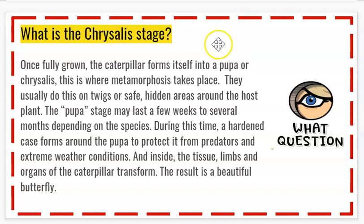What is the chrysalis stage? Once fully grown, the caterpillar forms itself into a pupa or a chrysalis. This is where metamorphosis takes place. They usually do this on twigs or a safe hidden area around the host plant. The pupa stage may last a few weeks to several months depending upon the species. During this time, a hardened case forms around the pupa to protect it from predators and extreme weather conditions, and inside, the tissue, limbs, and organs of the caterpillar transform, and the result is a beautiful butterfly.